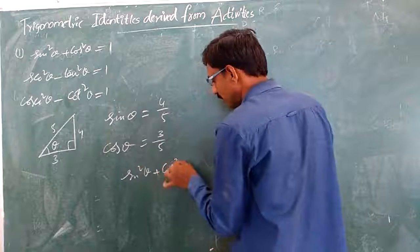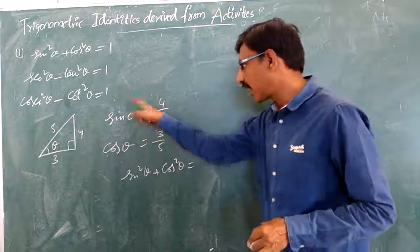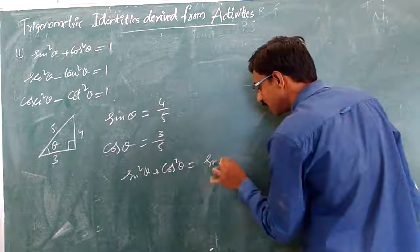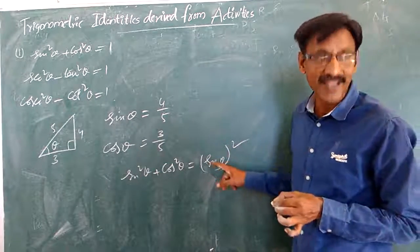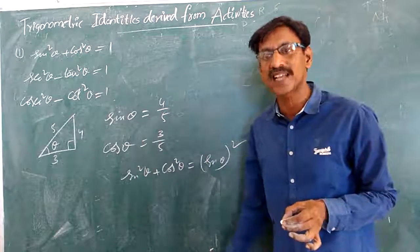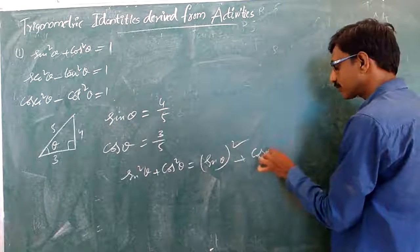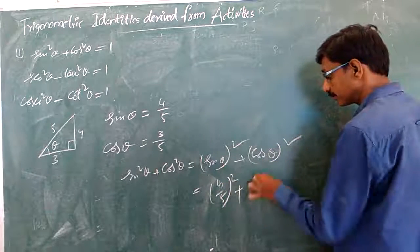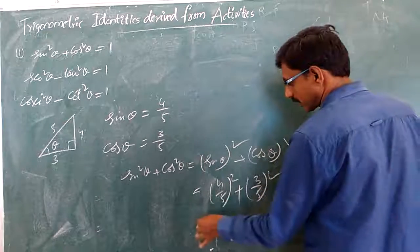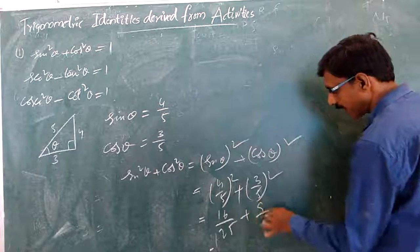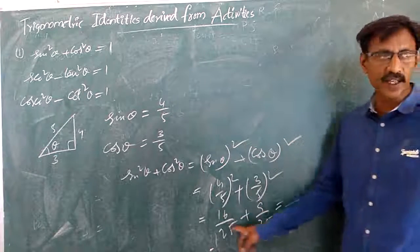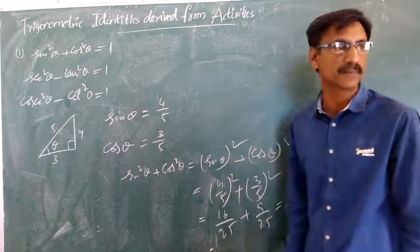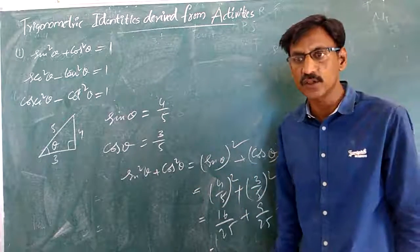Sine²θ + cos²θ. Keep in mind: sin θ is a ratio, and sin²θ means (sin θ)² — the whole sine is squared, not just theta. So (4/5)² + (3/5)² = 16/25 + 9/25. Taking LCM: (16 + 9)/25 = 25/25 = 1. So sin²θ + cos²θ is always equal to 1.